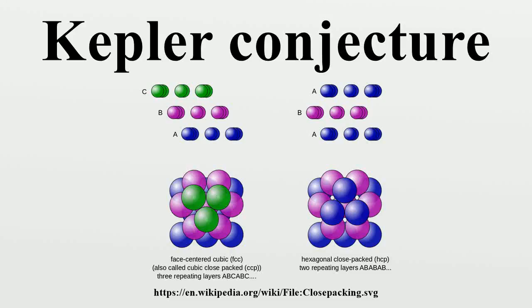The Kepler conjecture, named after the 17th century mathematician and astronomer Johannes Kepler, is a mathematical conjecture about sphere packing in three-dimensional Euclidean space.